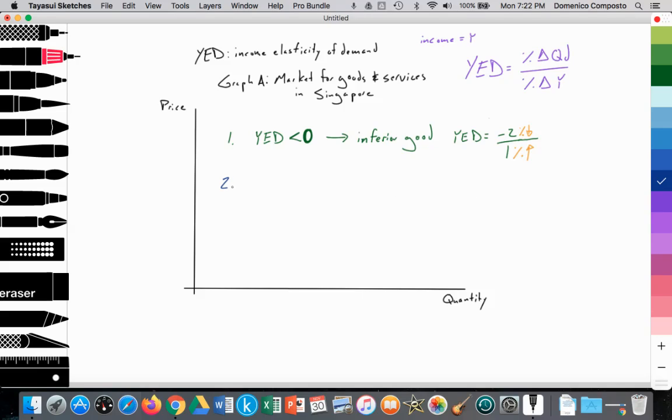If YED is greater than zero, then that indicates the good is a normal good where consumption rises positively with a rise in income.